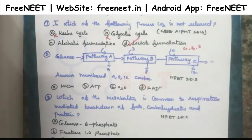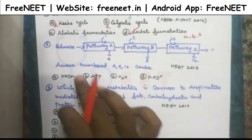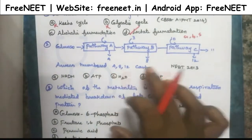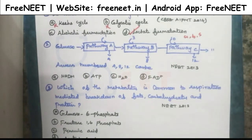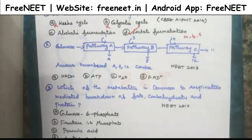The second question gives a pathway and asks what arrows numbered 4, 8, and 12 represent. We know that in each pathway, the system releases energy in the form of ATP. So option 4 is ATP, option 8 is ATP, and option 12 is ATP. In each process, the system releases energy as ATP. The answer is ATP.